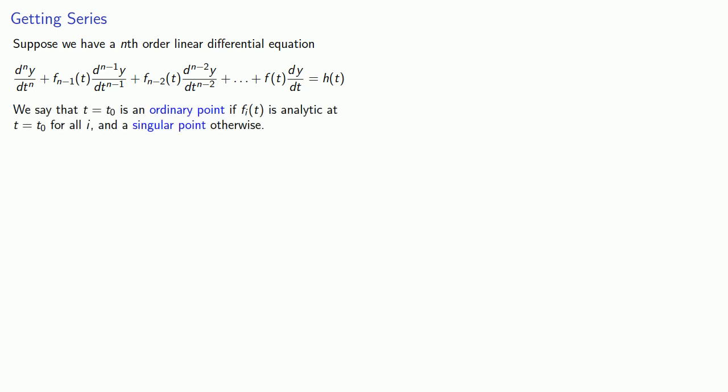We say that t equals t0 is an ordinary point if our coefficient functions are analytic at t equal t0 for all i and a singular point otherwise.